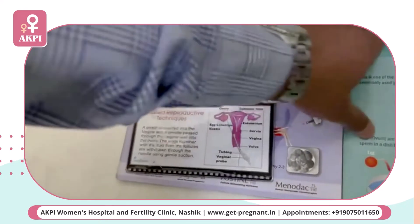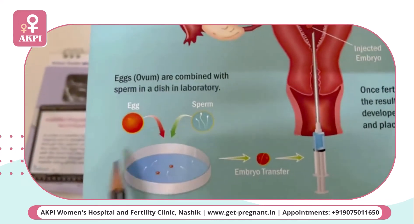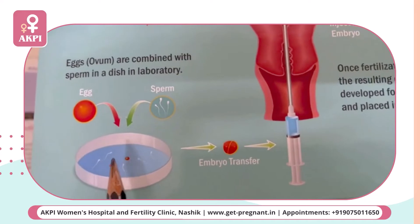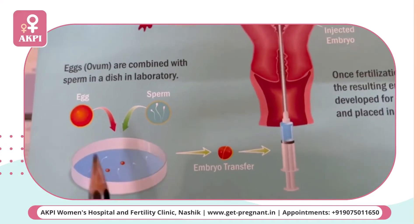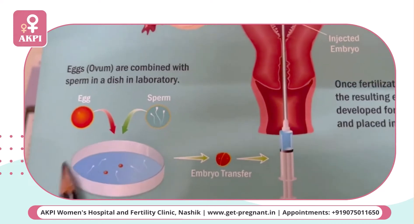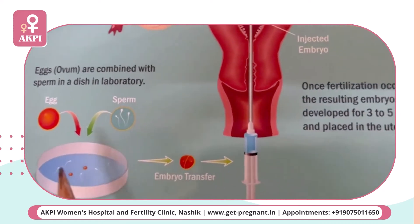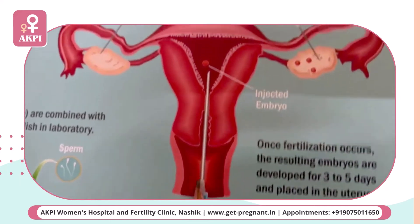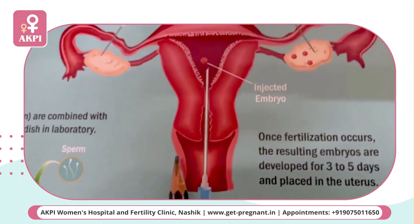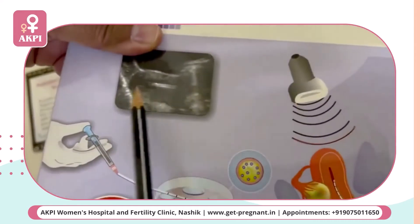These eggs are then cultured in the lab. They are inseminated with sperm or injected with sperm. And when the embryo is formed, they are inserted into the uterus through the vagina.